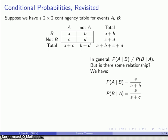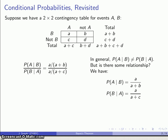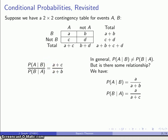We'll employ a standard tactic in mathematics: we have no idea what to do next, so we'll try anything. One standard thing we might do is look at the ratio between those two probabilities. Because the numerator A is the same in both cases, when we simplify we get the fraction A plus C over A plus B. A plus C is the number of times A has occurred, and A plus B is the number of times B has occurred.